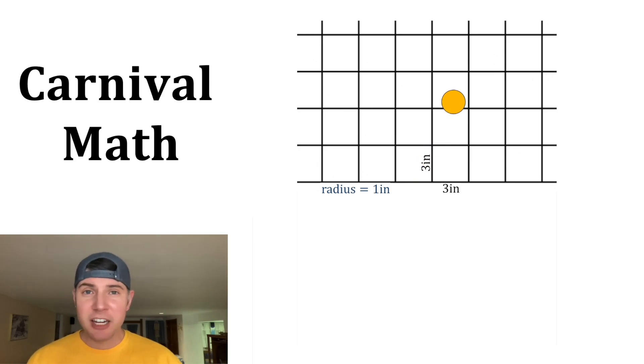If the token touches any of the grid lines, you don't win, but if you get it inside one of the squares without touching the edges, you win an awesome prize. What is the probability that you win that awesome prize?